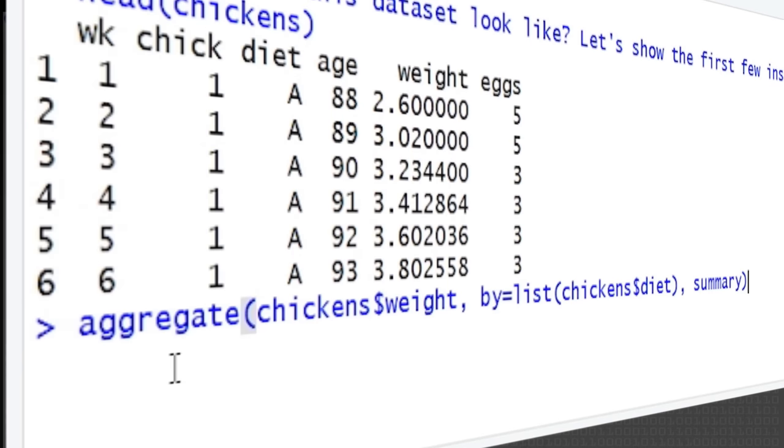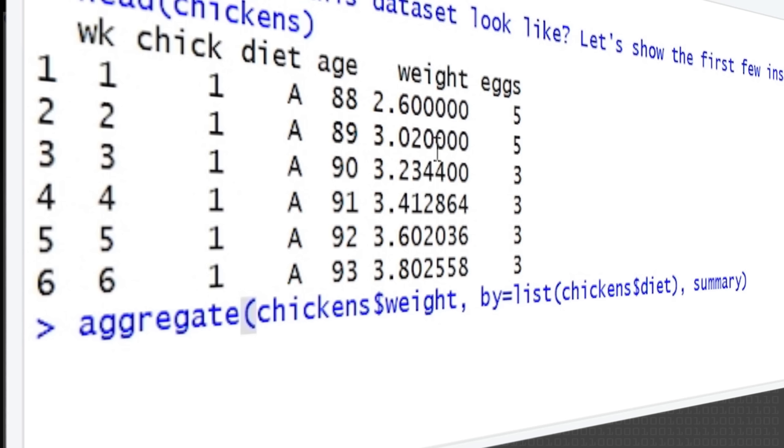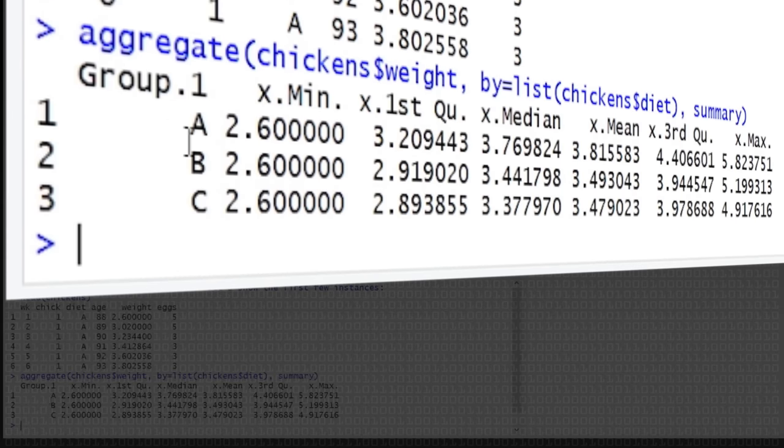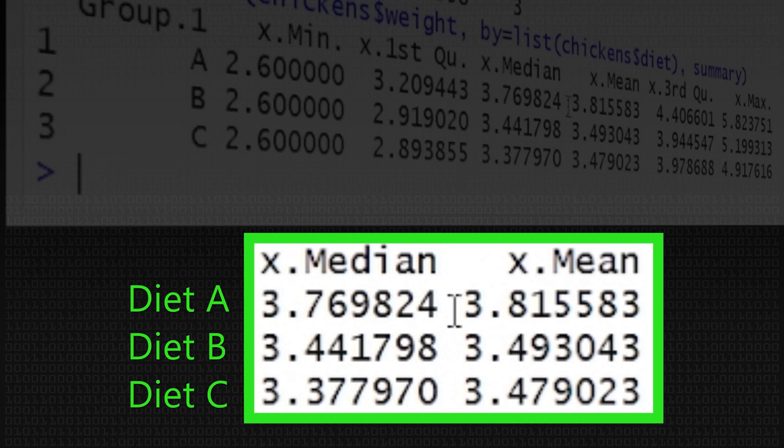Now, what we want to try and do is see if there's any kind of relationship between the diet they're on and the number of eggs they're producing or the weight of the chicken or anything like this. So the first thing we could do is we could have a look at the aggregate function. So I'm going to place this down here and we'll talk through it. What the aggregate function does is let us produce, let's say, a summary or calculate some means or medians over a data set, but this time grouping by a certain attribute. So in this case, what we're going to do is we're going to aggregate the weight of the chickens, but in groups of their diet. So all the A's, all the B's and all the C's, and then we're going to, for each of those, we're going to calculate a summary. So let's run that, and you can see that we've got our group down here. For A, we've got the minimum, the maximum, the median, the mean, and we can see some slight differences perhaps in these data sets. I mean, the median and the mean, for example, of group A is 3.8, whereas the mean for group C is 3.4. So maybe there's a slight difference in these things.